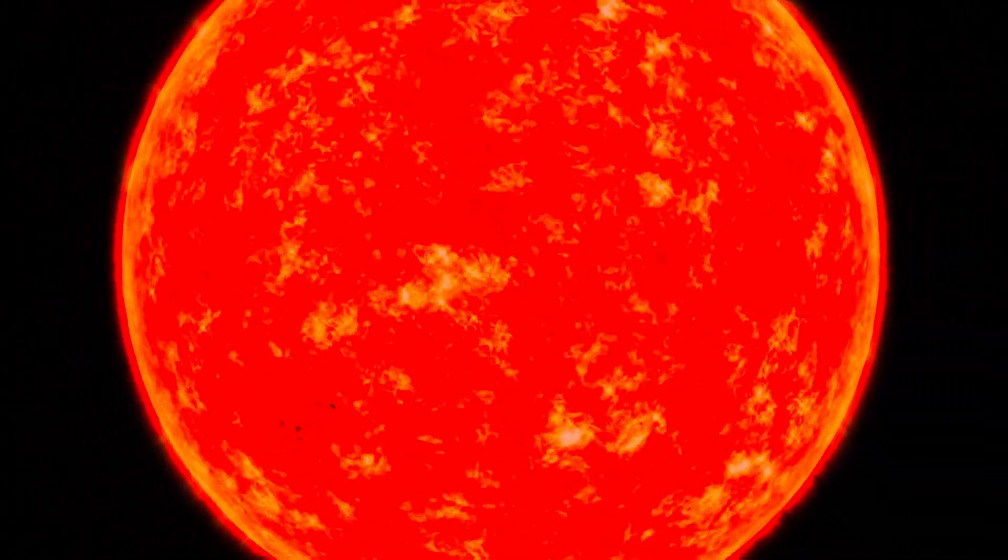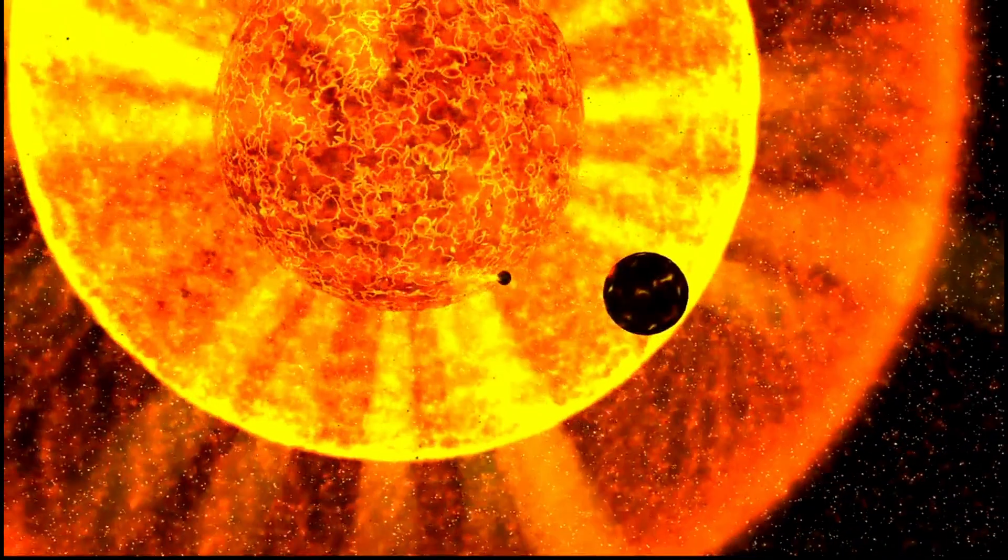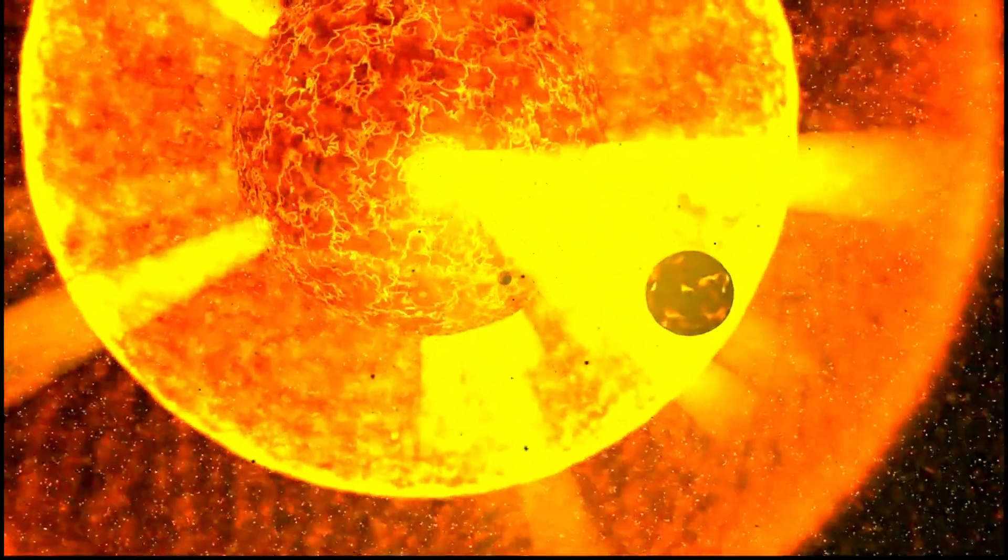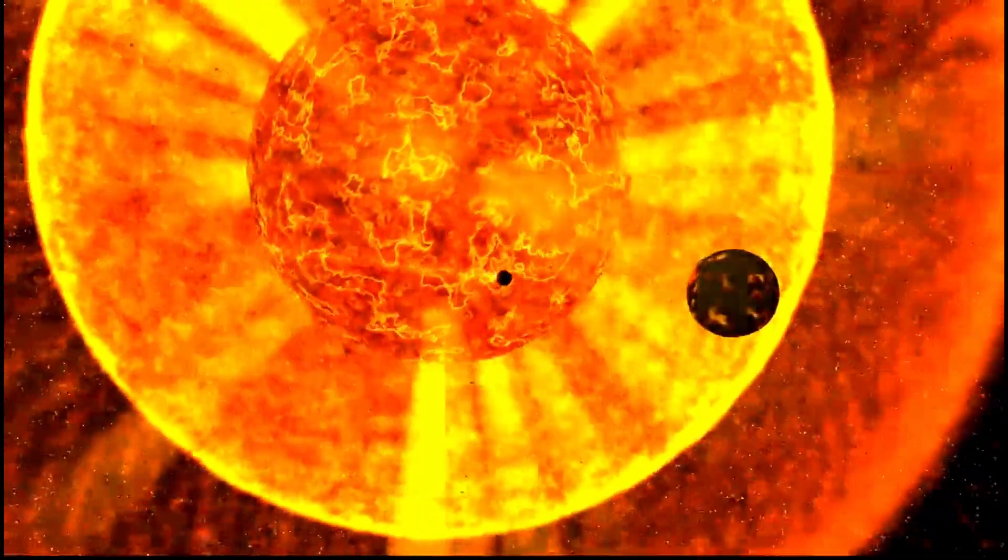Stephenson 218 has an estimated radius of 2,150 solar radii. If it replaced the Sun in our solar system, it would extend past the orbit of Saturn.